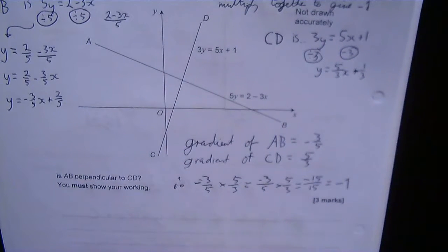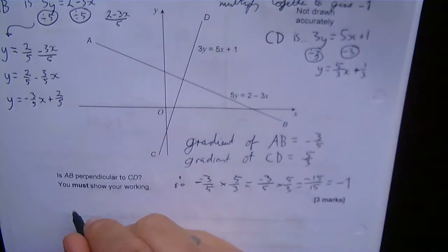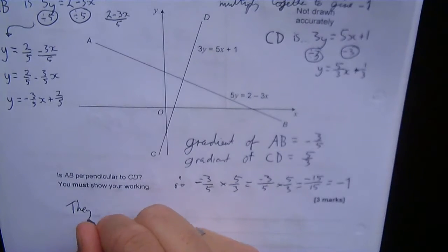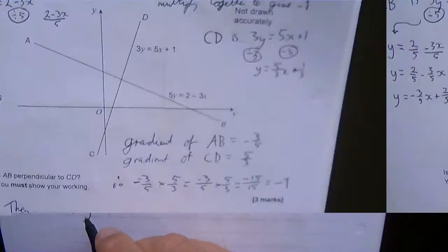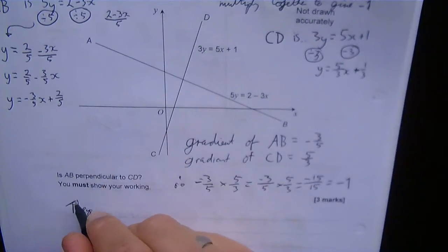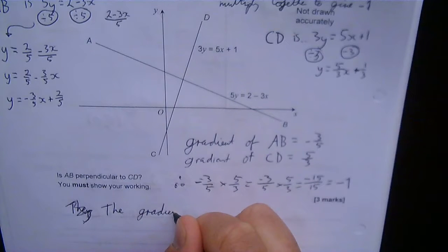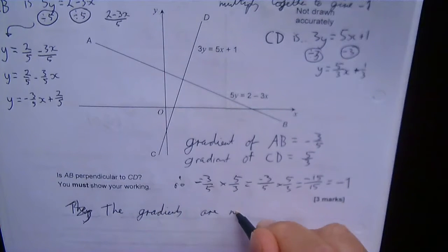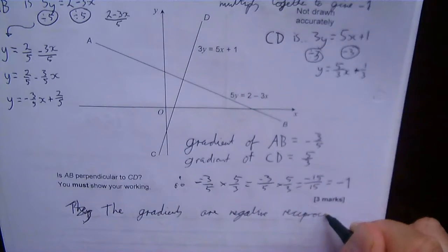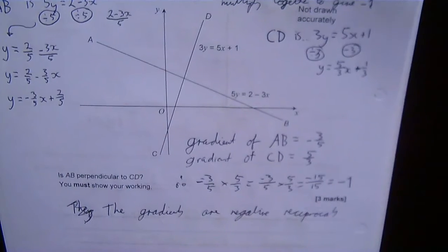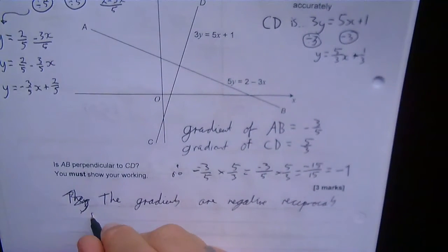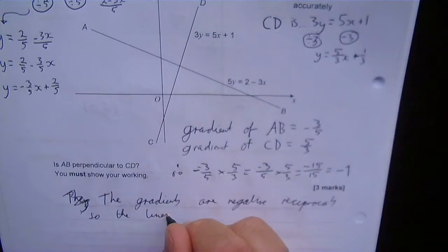So the gradients are negative reciprocals, so the lines must be—I nearly said parallel—the lines must be perpendicular.